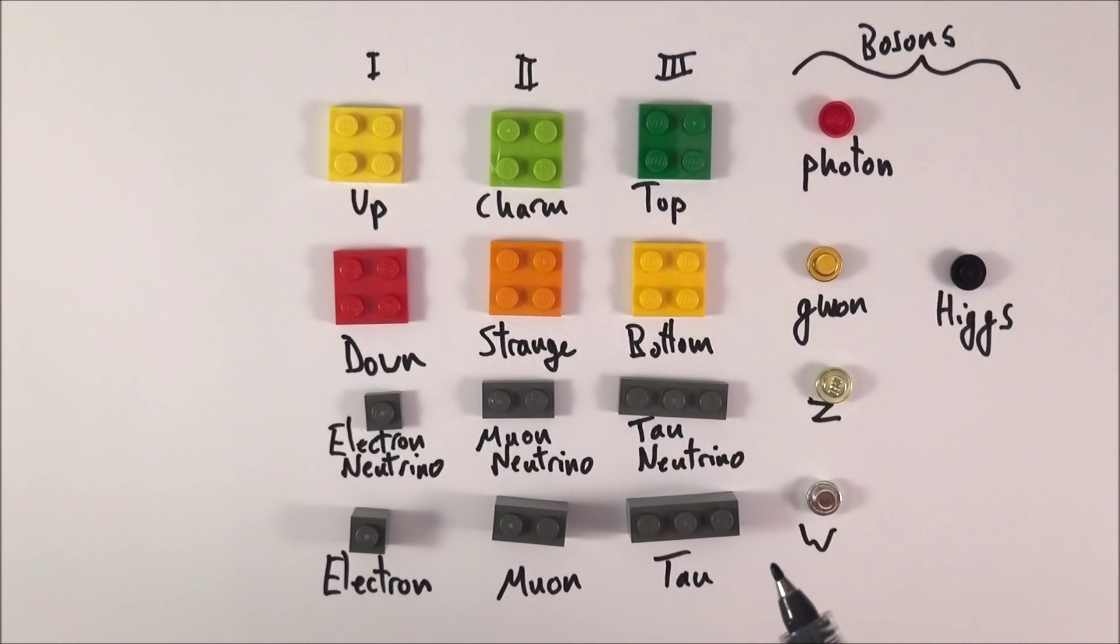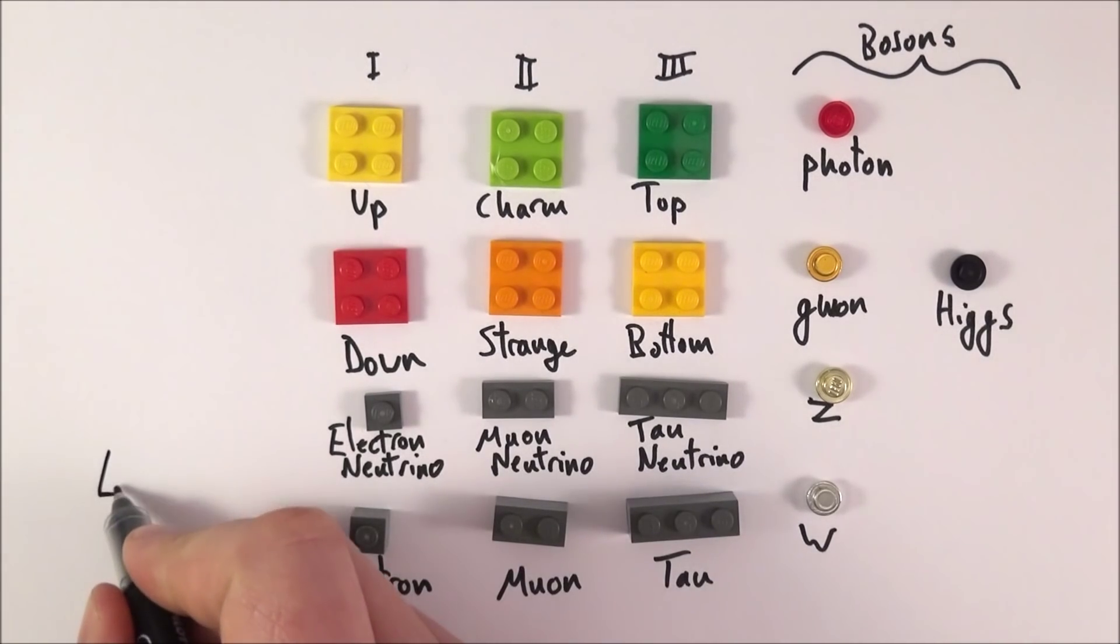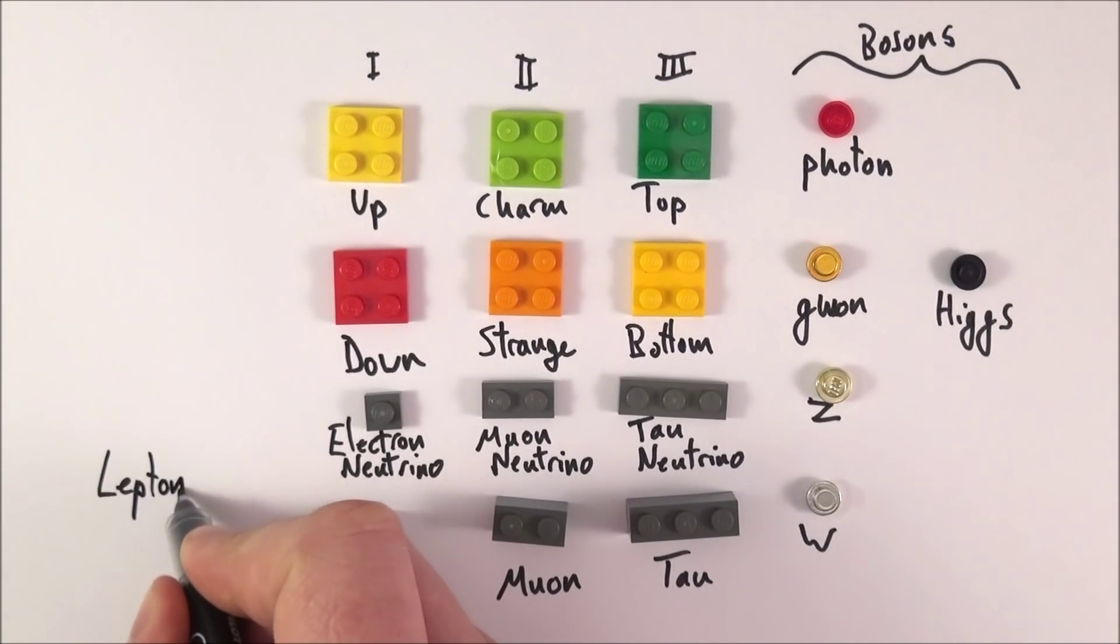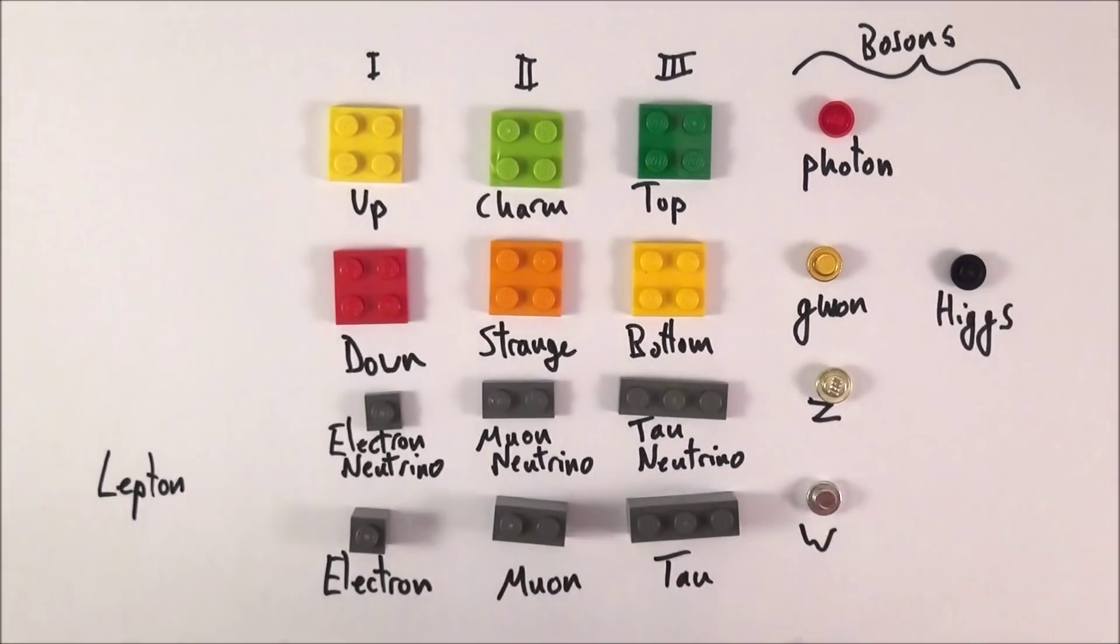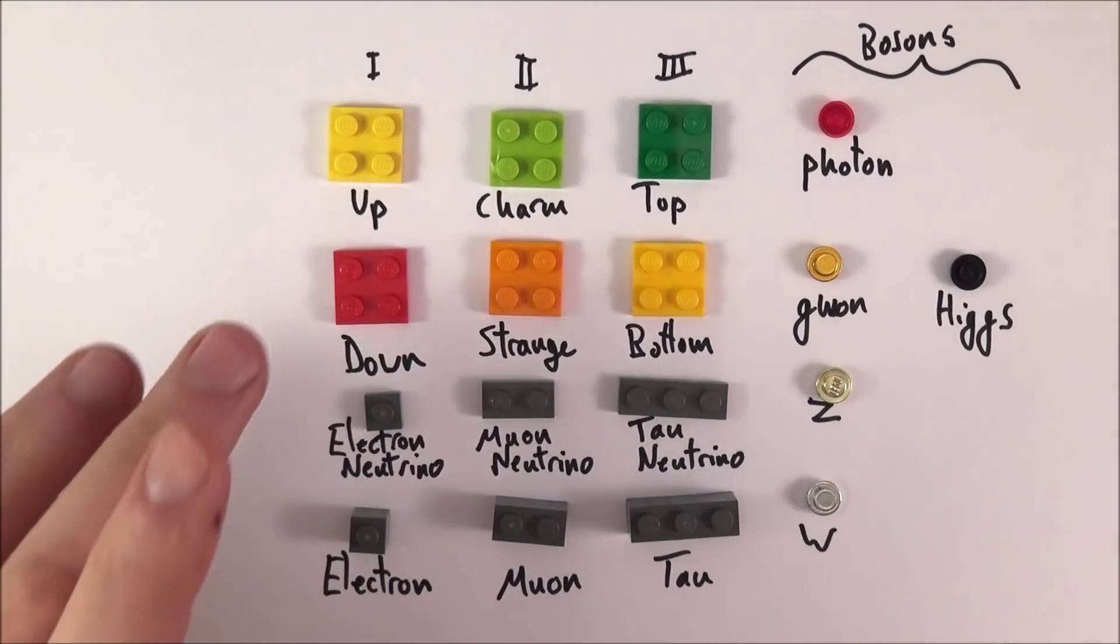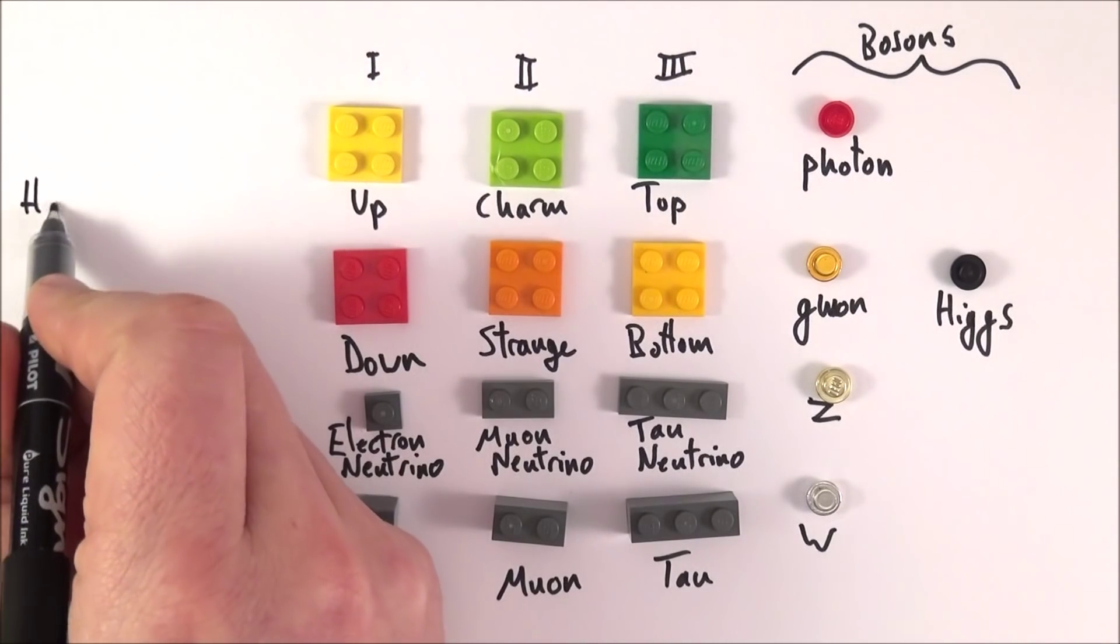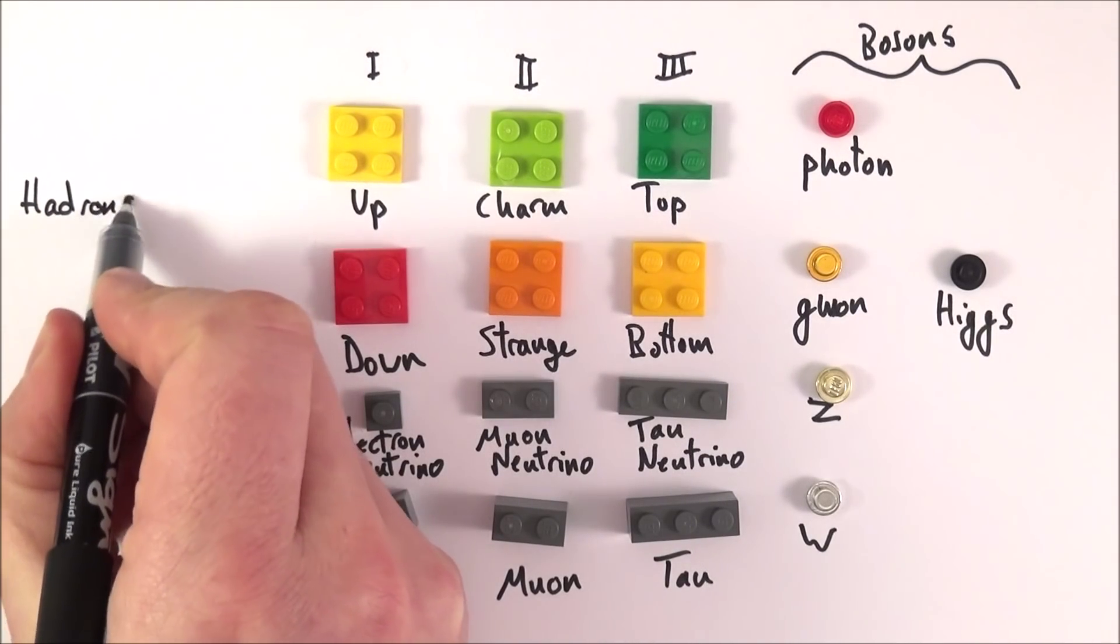If we classify things, we can classify things in two ways. First of all, the things at the bottom in gray here are what we call leptons. Just like in biology, we classify things as birds and fish and so on, we can classify particles in different ways. At the top, using these six particles here, what we then do is we make up things called hadrons.